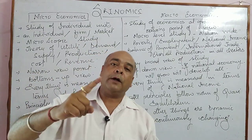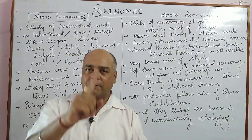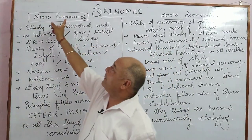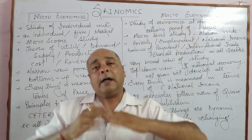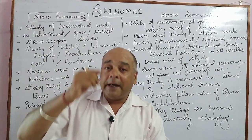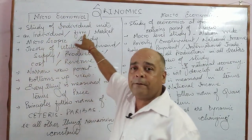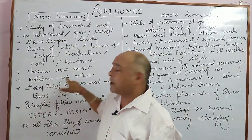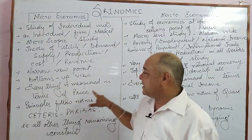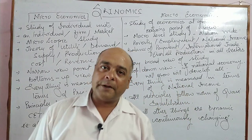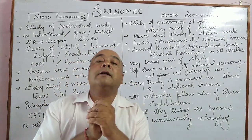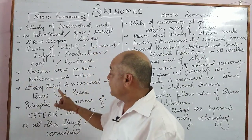It will always be one thing — individual, firm, or market — but one unit, and that is why it is narrow. It is often referred to as a bottom-up view, meaning if one firm does well and every firm does well, national output and national income will automatically increase. We are serving national development through each unit, whether it is an individual or a firm. Everything is measured here in terms of price — demand, production, and cost are all measured using price as the basic platform.